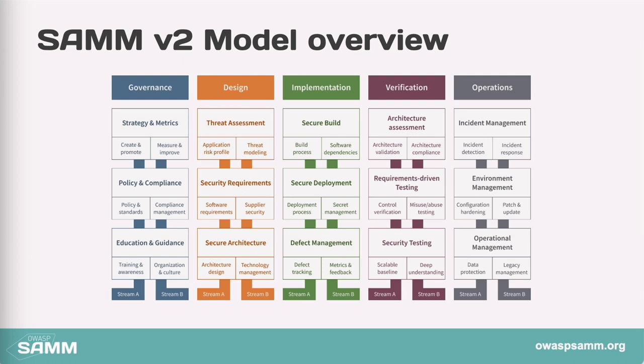At the highest level, what you should remember is that SAM defines five business functions. Each business function is a category of activities that any organization involved with software development must fulfill to some degree. Each business function has three security practices — these are areas of security-related activities that build assurance for the related business function. Security practices have activities grouped in logical flows and divided into two streams, which cover different aspects of a practice and have their own objectives, aligning and linking the activities in the practice over different maturity levels.